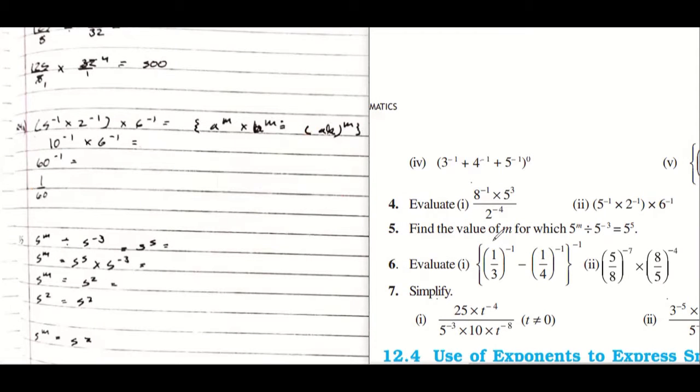Okay, moving on to question number five: find the value of m. It's a very important question. So let us do that. Five power m divided by five power minus three equals to five power five.